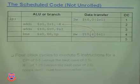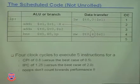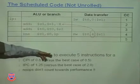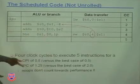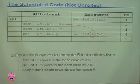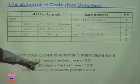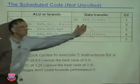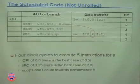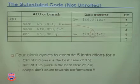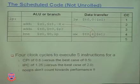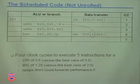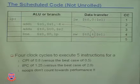It took us four clock cycles to execute five instructions, so we can get a CPI and an IPC from that very easily. The CPI is 0.8, but our best case if we'd filled all slots would be 0.5. Our IPC - instructions per cycle - is now 1.25; our best case would be 2.0. So we're not very close to the best.